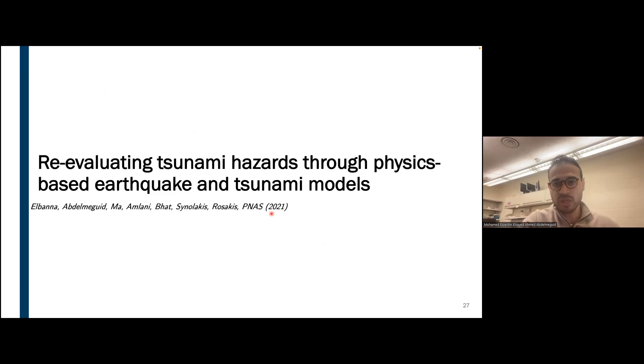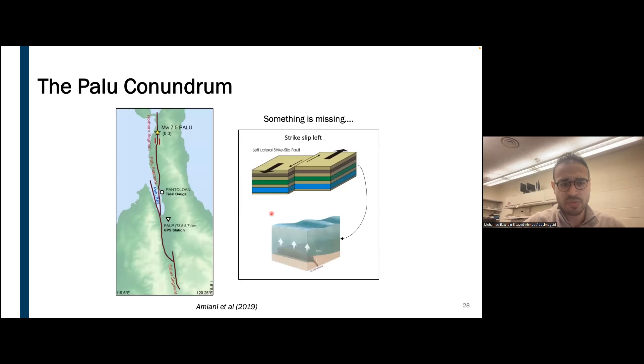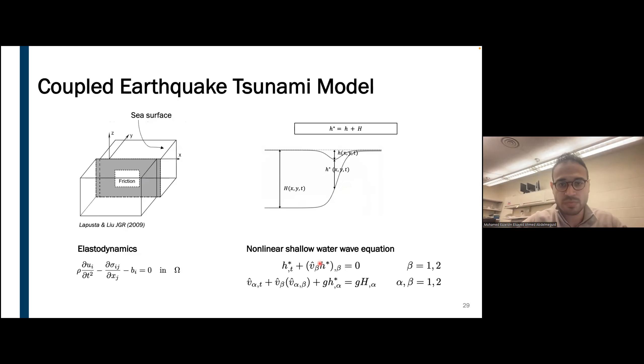Another topic that I will touch upon quickly in the remaining time here, and feel free we can discuss more later, is how we managed to reevaluate the tsunami hazards through similar physics-based models of earthquakes and tsunamis. This was mainly motivated by an earthquake that occurred in Palu which caused a significant tsunami. The emergence of this tsunami was particularly confusing because strike slip faults, which mainly deforms in horizontal direction, doesn't provide sufficient vertical uplift to cause that tsunami wave on the sea level.